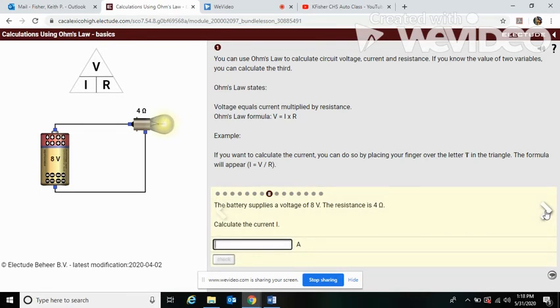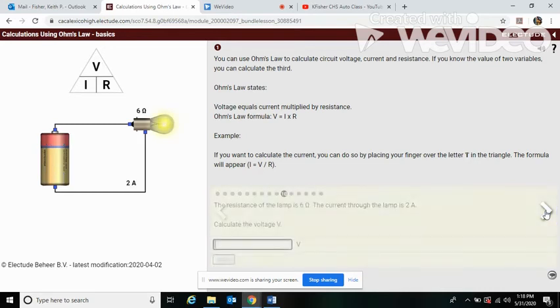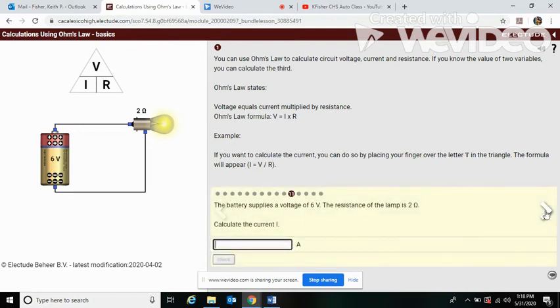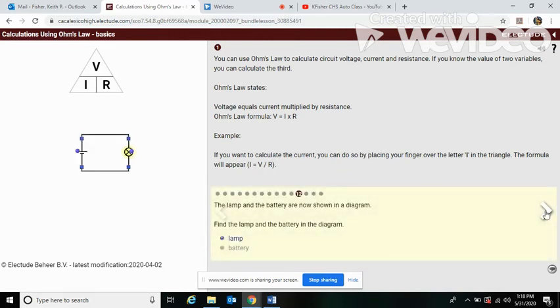So this next question, question 8, basically is going to repeat everything that we just learned. So I'm going to have you guys do on your own 8, 9, 10, 11. It's just simple math again, just follow the formula. Then question 12, they want you to click on which one's the lamp, which hopefully you guys know by now. The lighted circle with an X is your lamp, and these two lines on the diagram is your battery.